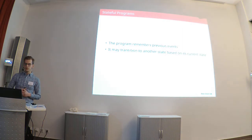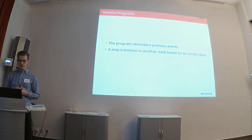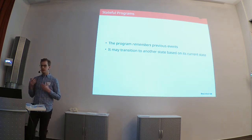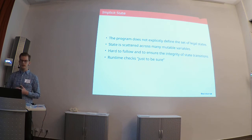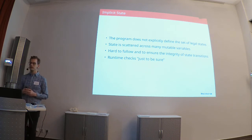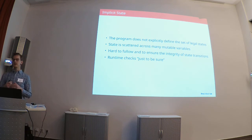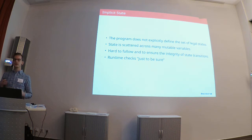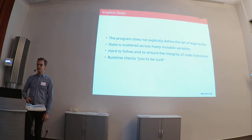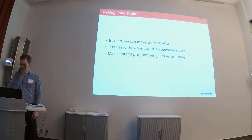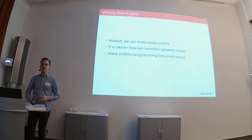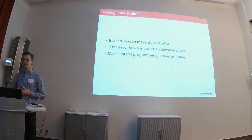So, state. A stateful program is a program that remembers its previous events — we call that the program state — and a stateful program may transition to another state based on the state it's in currently. One problem with this is implicit state. By implicit I mean that the program does not explicitly define the set of legal states it can be in. So state is instead scattered across the whole codebase — maybe a lot of mutable variables or global stuff defined everywhere — and you start having to do defensive programming and check stuff everywhere, just to be sure that you still have state integrity. What we can do instead is to make state explicit, which makes it much more clear when and how we transition between different states. I'd argue this makes stateful programming less error prone.